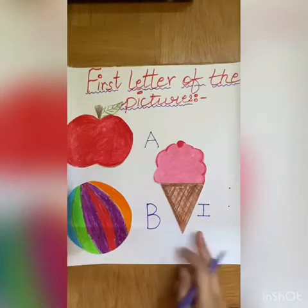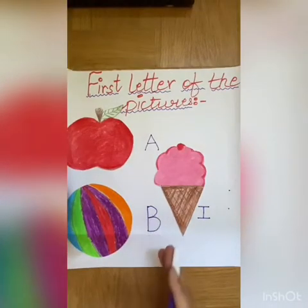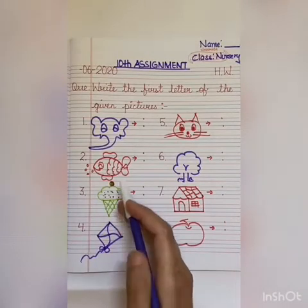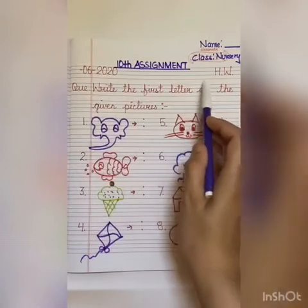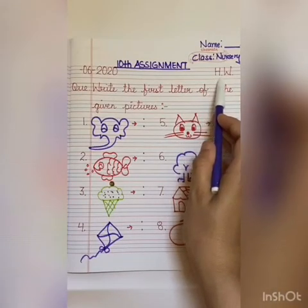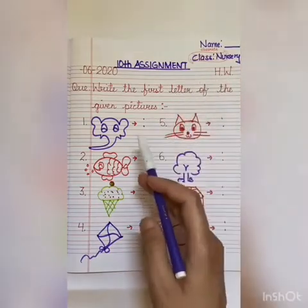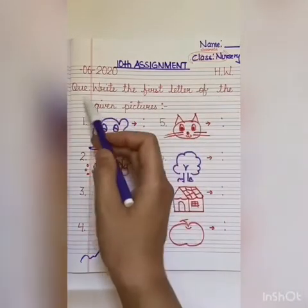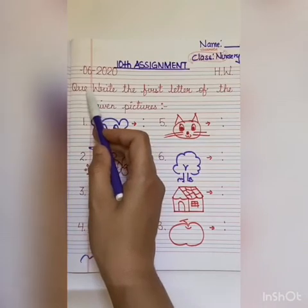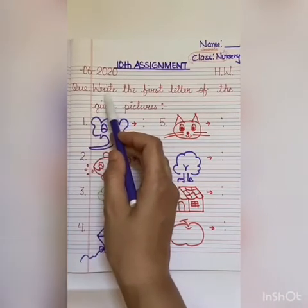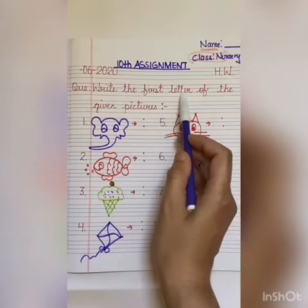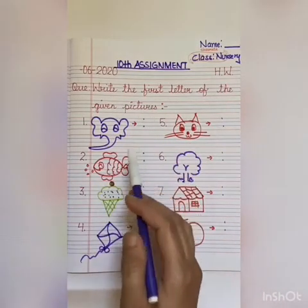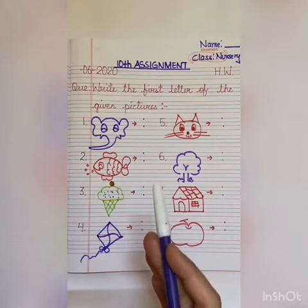Okay children, now keep your notebook and pencil ready. First of all, you will put the date here, whatever the date is. And on the other side, you will write H.W. — that is your homework. Parents, please guide your child to write the date and homework. Question: Write the first letter of the given pictures.